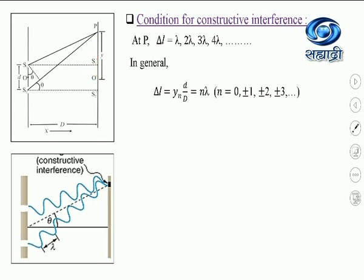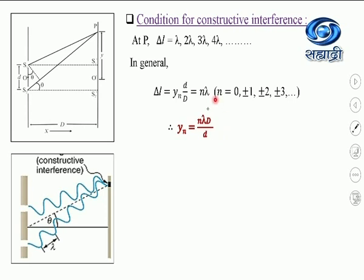This is how we get the positions of different bright fringes on the screen. From this, we can write the equation for the distance of the nth bright fringe: Yn = n·λ·D / d, where D is the distance between the slit and the screen, and d is the distance between the two slits. So the distance of the bright fringe is directly proportional to the wavelength of light used, directly proportional to D, and inversely proportional to d.